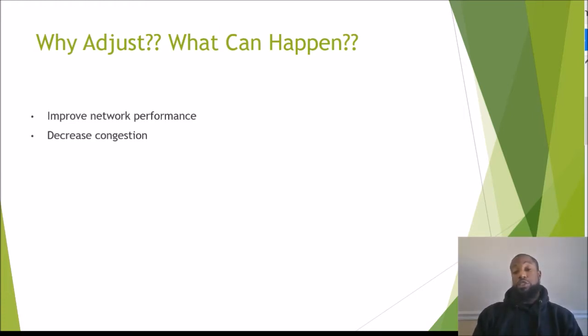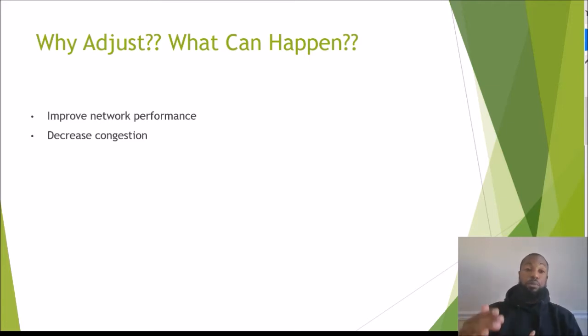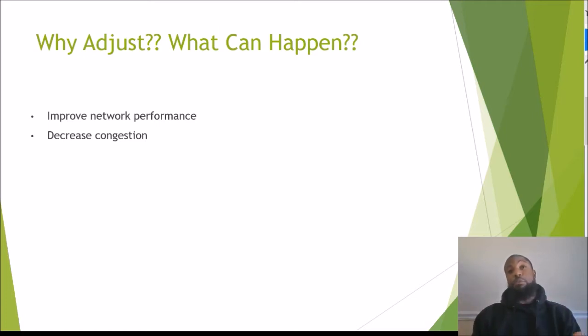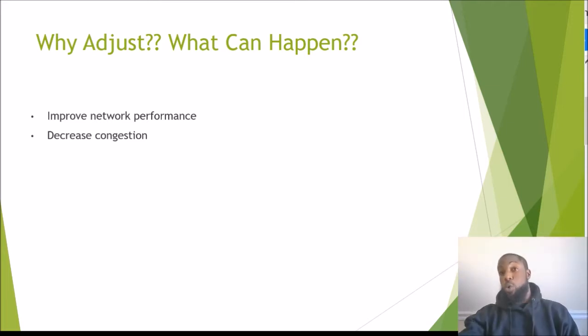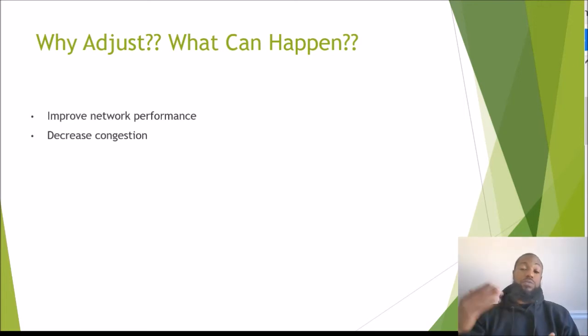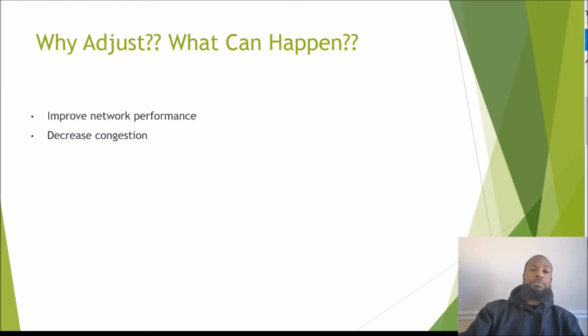Adjusting the window size improves network performance and decreases congestion. You can also do this on a Windows computer through the Windows registry. Dropped packets equal congestion, and that's what window sizing helps address. That's pretty much it — keeping this short and simple.